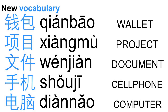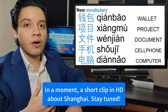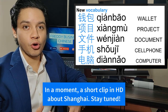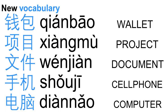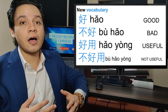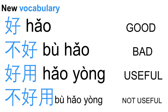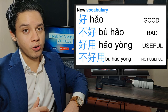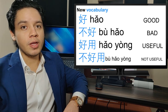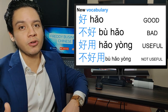First we have 钱包, that means wallet. 项目 means project. 稳健 means document. 手机 means cell phone. 电脑 means computer. Now some new adjectives: 好 means good, 不好 means not good or bad, 好用 means useful, 不好用 — 不 means no, so 不好用 means not useful.